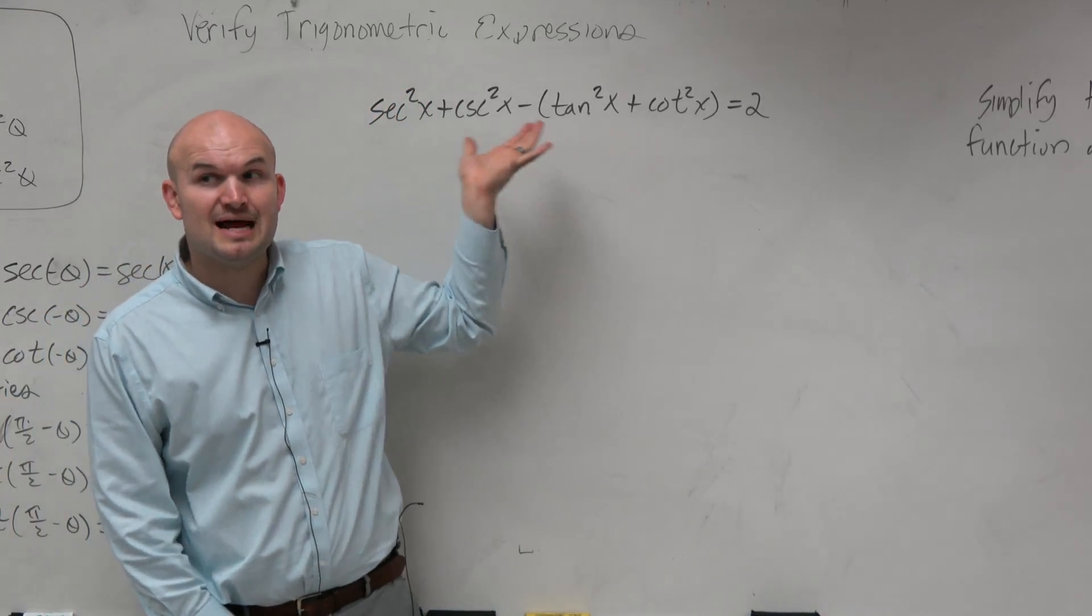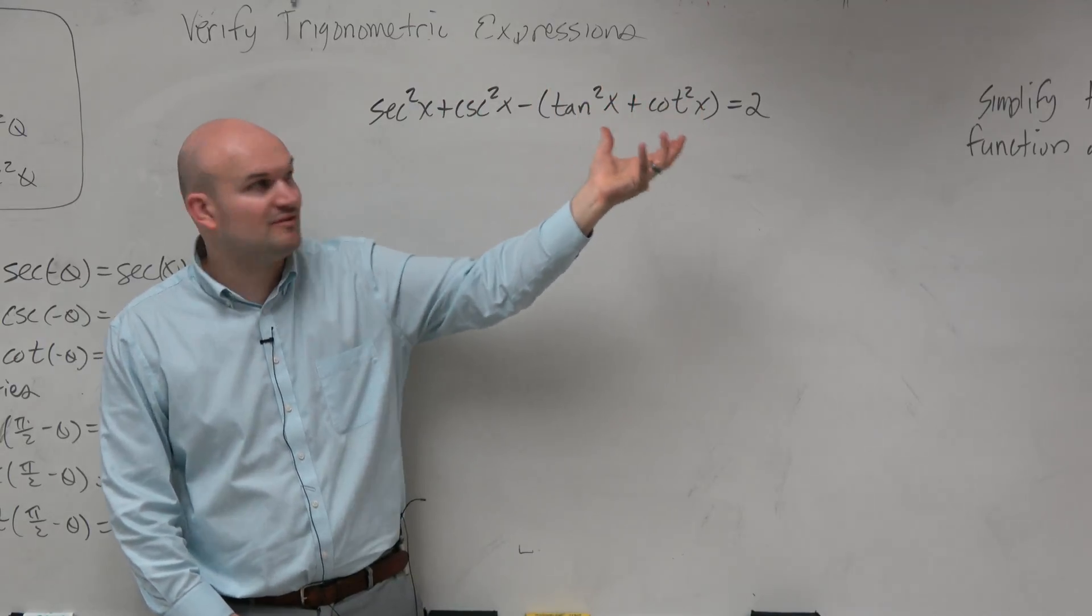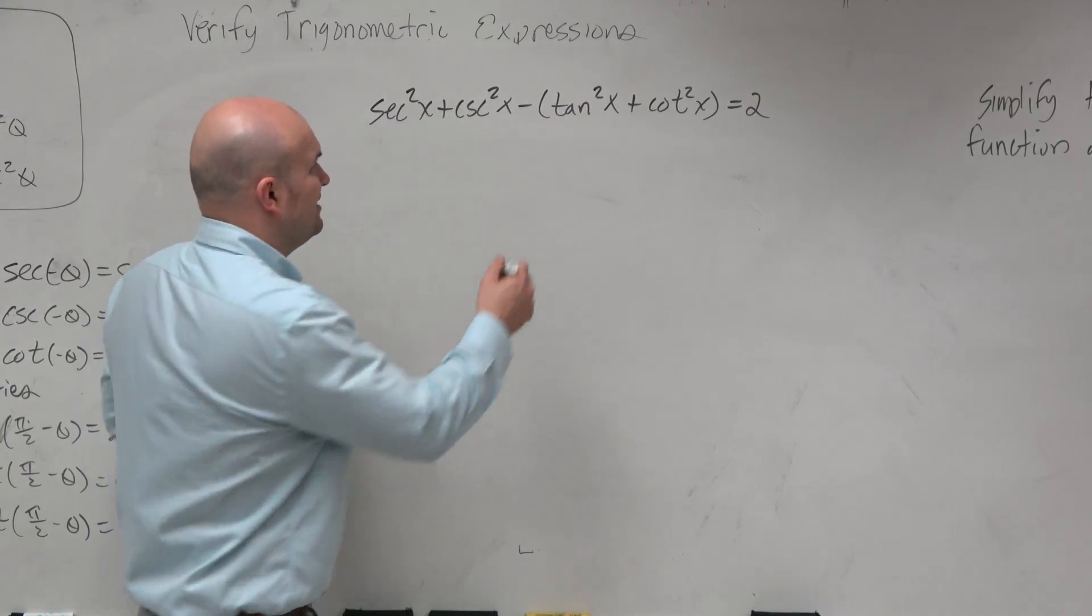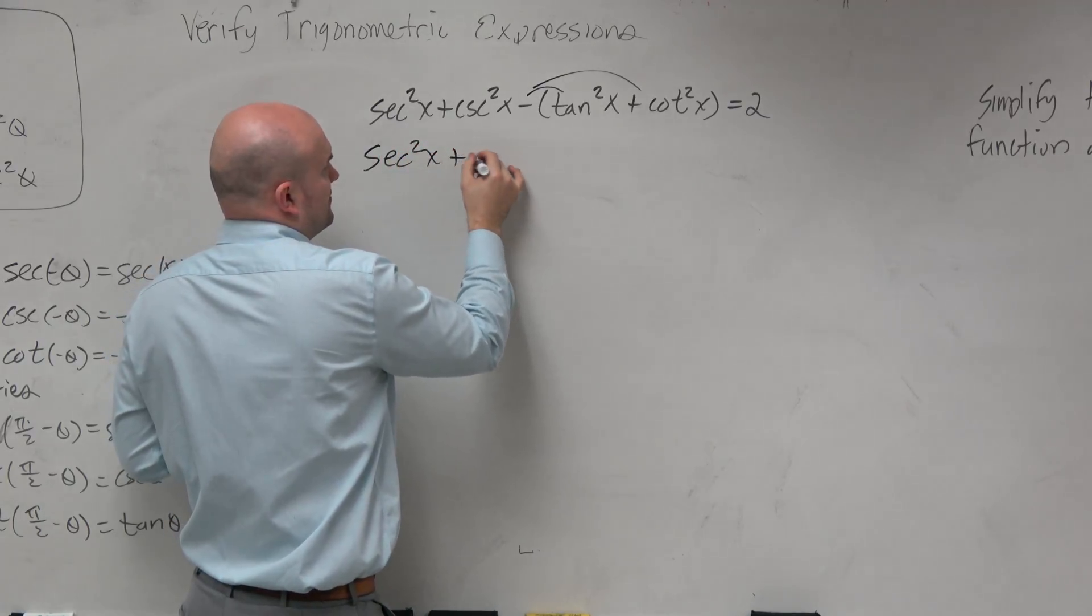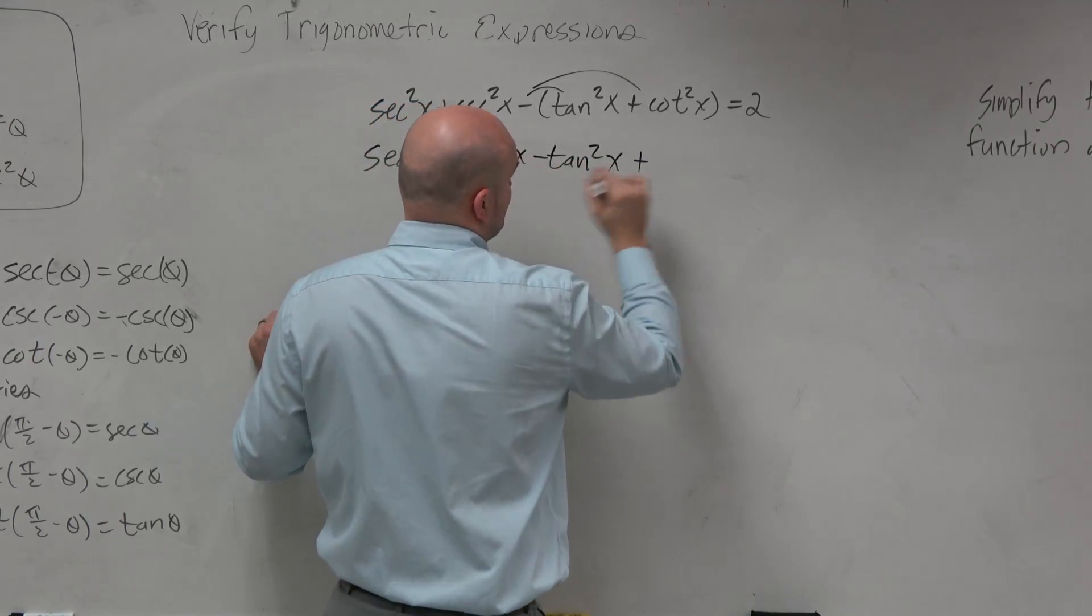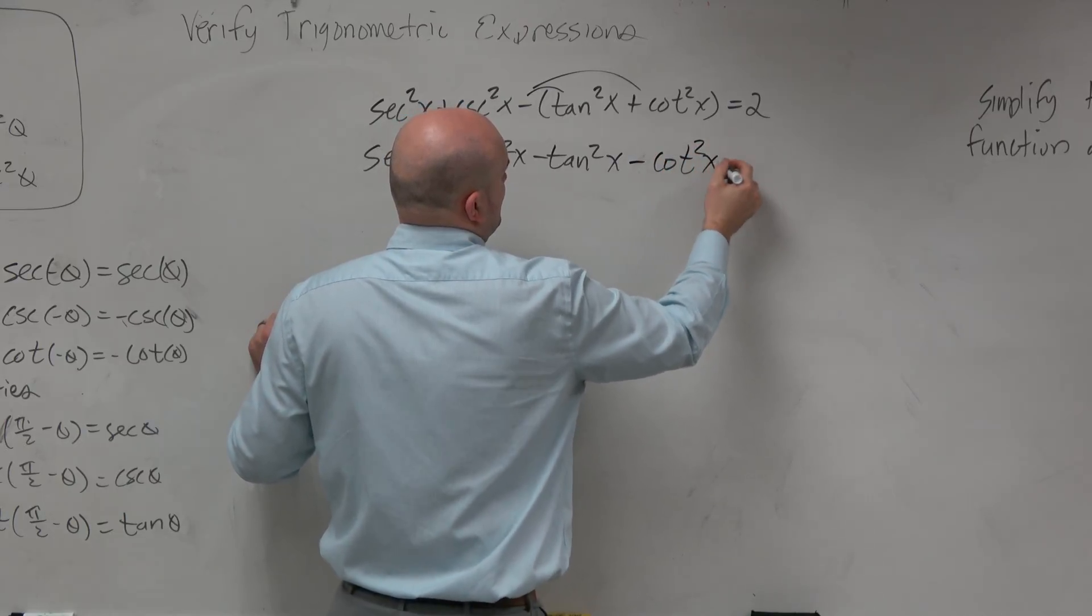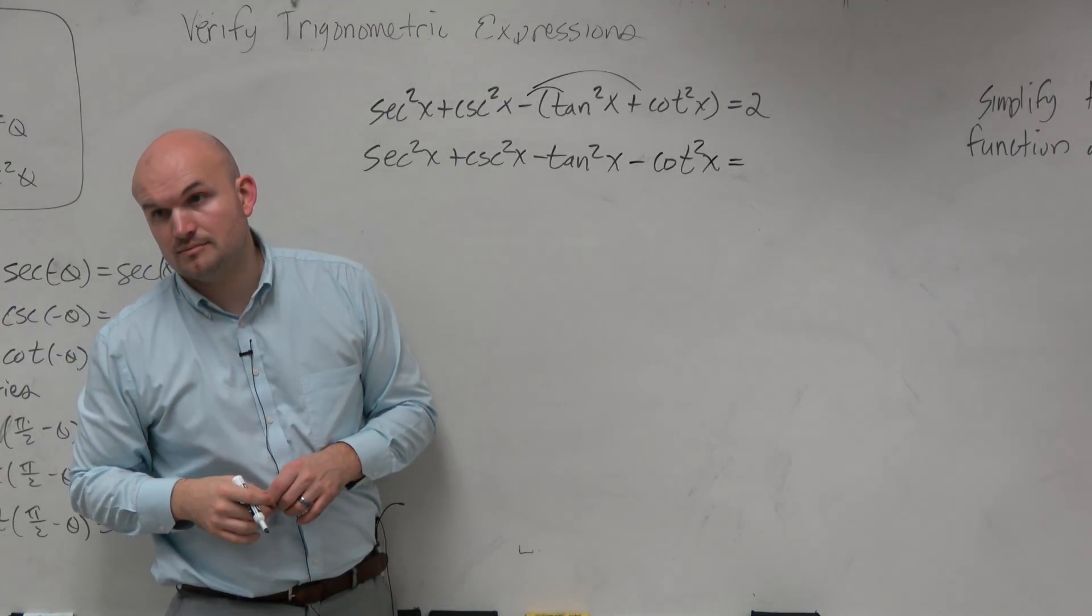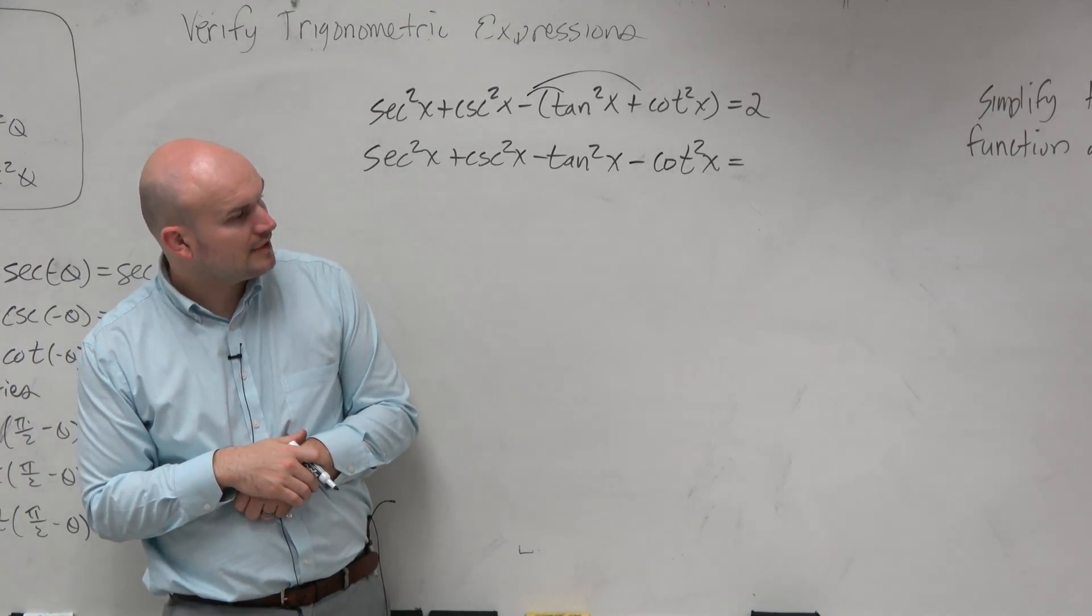I'll tell you the first thing that I do is whenever I see an operation, I usually like to apply that operation. That usually helps me simplify something down, right? Because if I have this minus subtract sign, it'd probably be a good idea to distribute that negative and then work on each one individually from there.